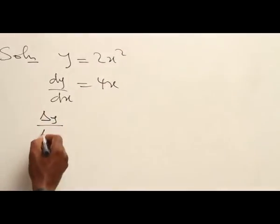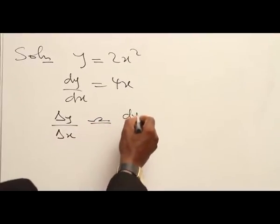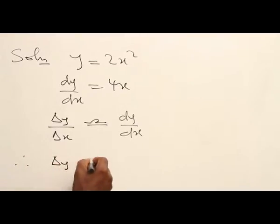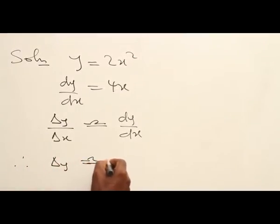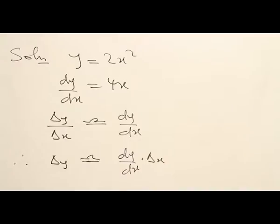Now, ΔY over ΔS is approximately equal to dY over dS. Therefore, ΔY is approximately equal to dY over dS times ΔS, which is the increase in S.